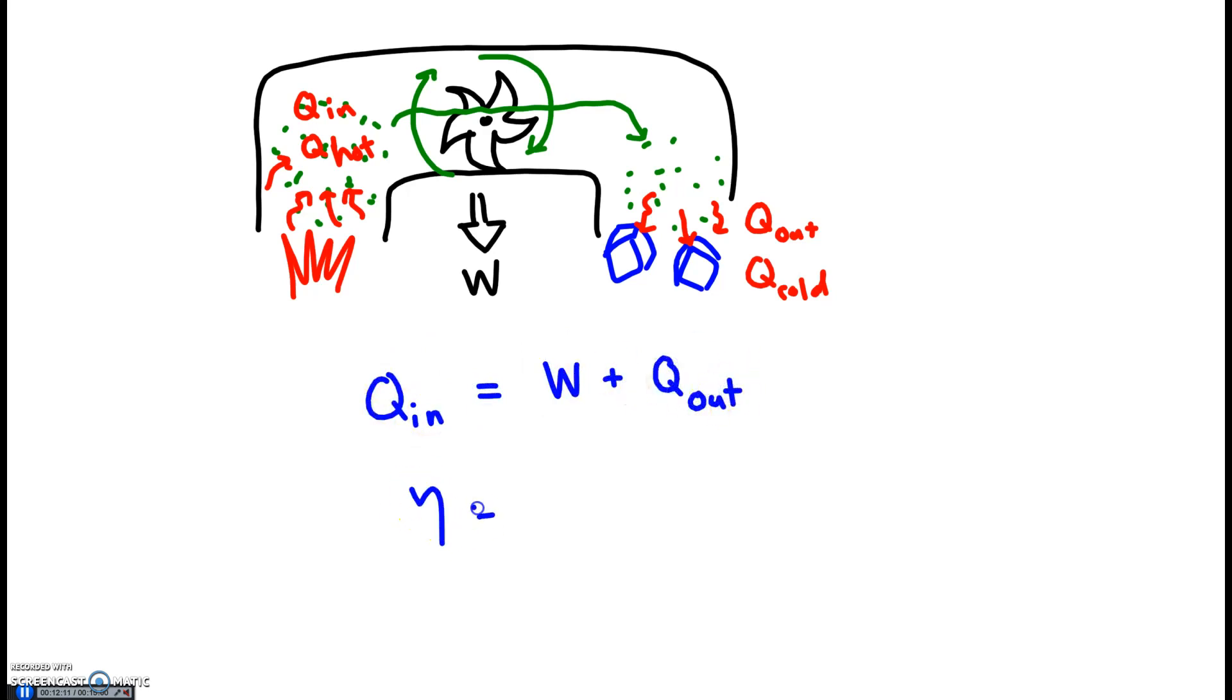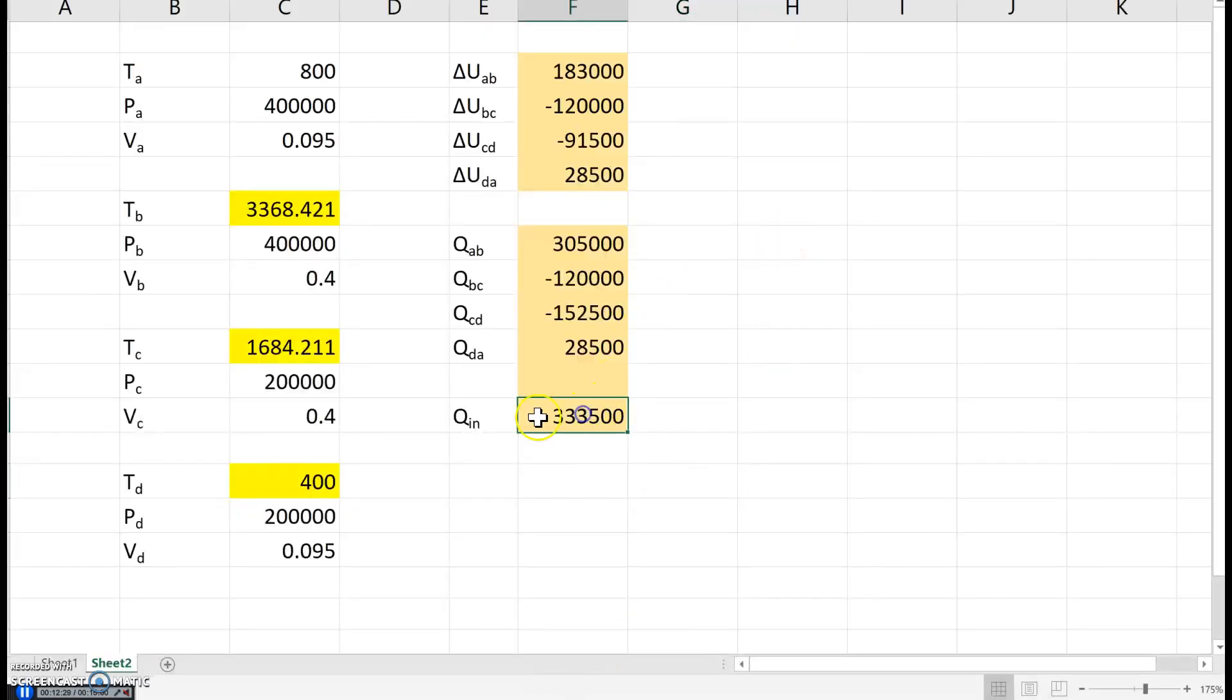The total is Q_in. Some of that goes toward work, the rest is dumped. The efficiency is the useful output divided by the total input. You have to find Q_in, the sum of the positive Q's. And this is just the area enclosed by the graph. This is Q_in, that's your denominator. This is the wasted amount. The work has to equal Q_in minus the waste heat values. That should be the work that you calculate when you do the area enclosed by the graph.